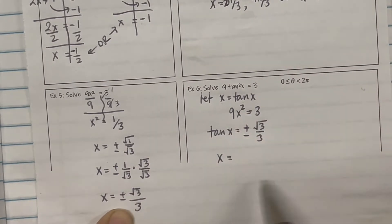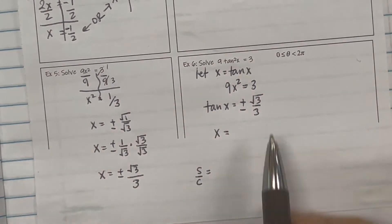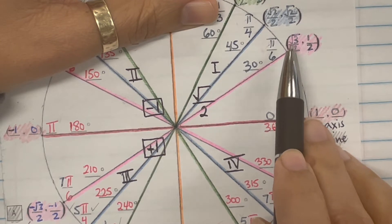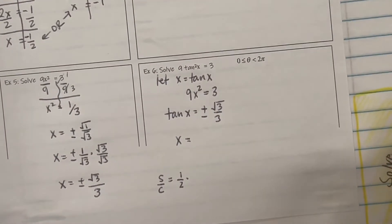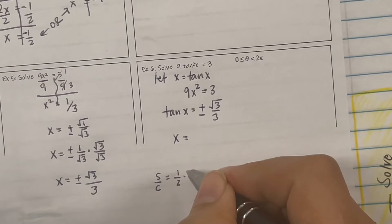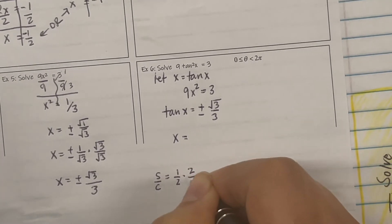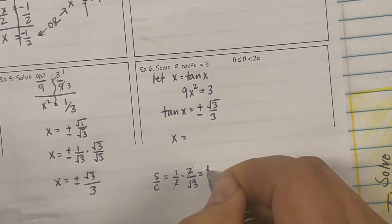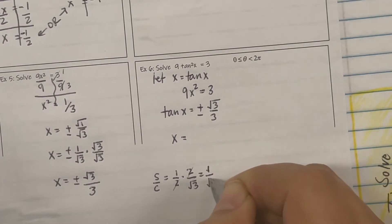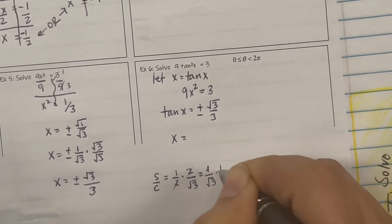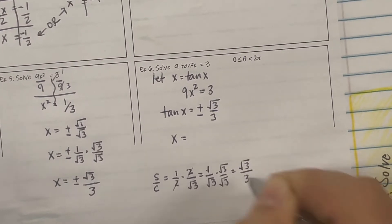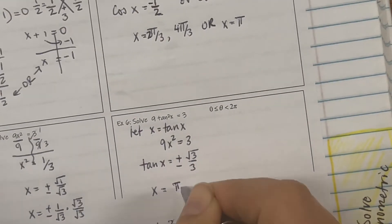Rewrite this as 9 tan squared x equals 3, which we found gives tan x equals plus or minus radical 3 over 3. The unit circle doesn't list tan directly, but tan equals sine over cosine. Looking for an answer with radical 3: try pi over 6. Sine divided by cosine is 1 half divided by radical 3 over 2. Keep the first, change division to multiplication, flip the second — that's 2 over radical 3. Rationalize: multiply by radical 3 over radical 3, giving radical 3 over 3. That's what we're looking for, so pi over 6 is an answer.